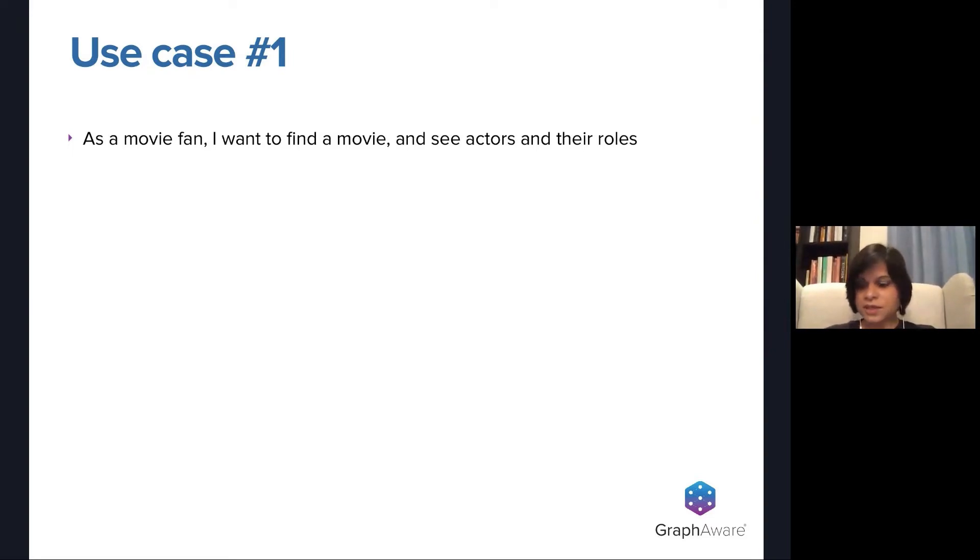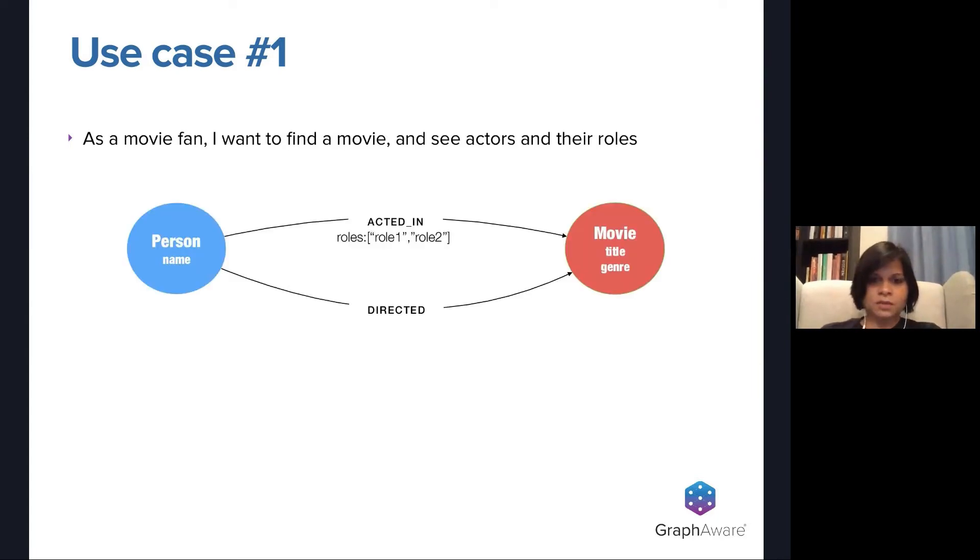So now we're going to start with this very basic candidate model, which has a person and a movie, and we're going to start talking through how the question can affect the way you model your graph. So this is our base version. And now we have a set of questions. Should the role be a property on the relationship or should it be a node? Should the genre be a property on the node? Should it be a node itself? Should it be a label on the movie? And of course, the answer is it depends. Use case number one, as a movie fan, I want to find a movie and see actors and their roles.